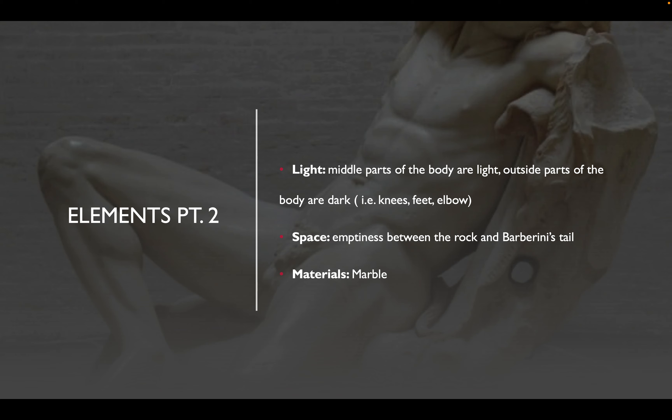The last few elements include light and shadow. More towards the middle part of the body you see lighter colors, with the outside showing more shadows and darkness — visible on his knees, feet, and elbow. When we look at the space, it is somewhat empty; we see the emptiness between the rock and the Barberini's tail. The material used for this sculpture was marble.